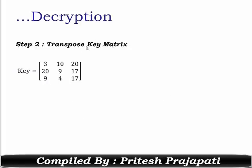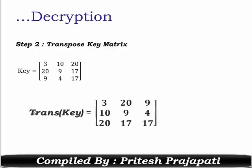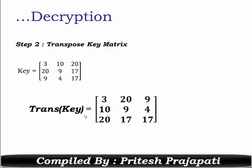Step two: transpose of the key matrix. The transpose is formed by converting rows into columns. The first row becomes the first column, giving values 3, 10, and 20, then 20, 9, and 17, and so on.